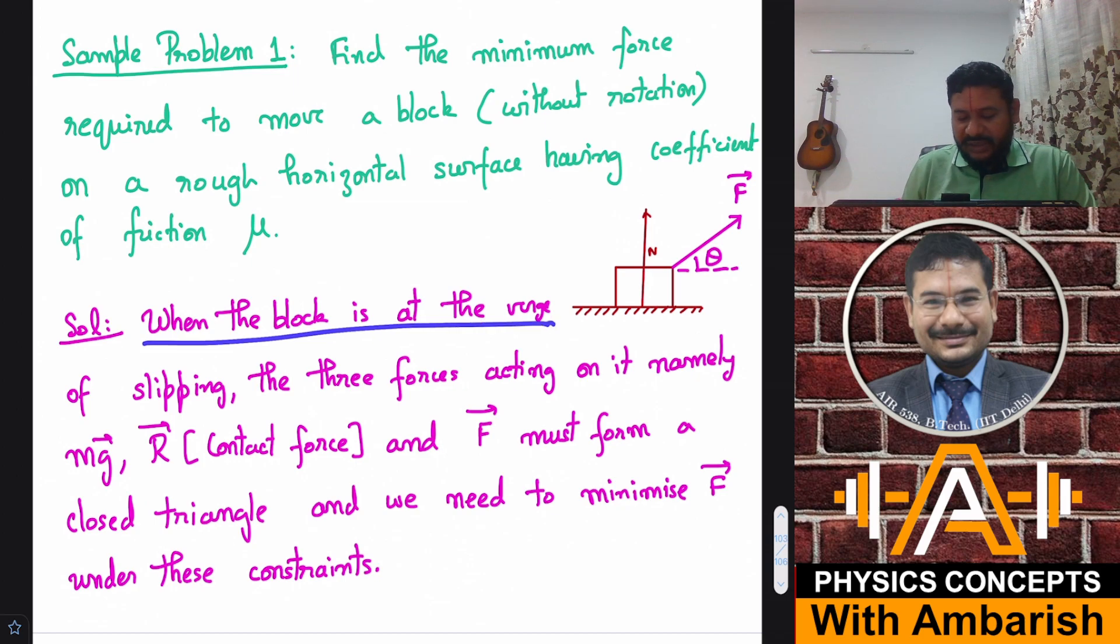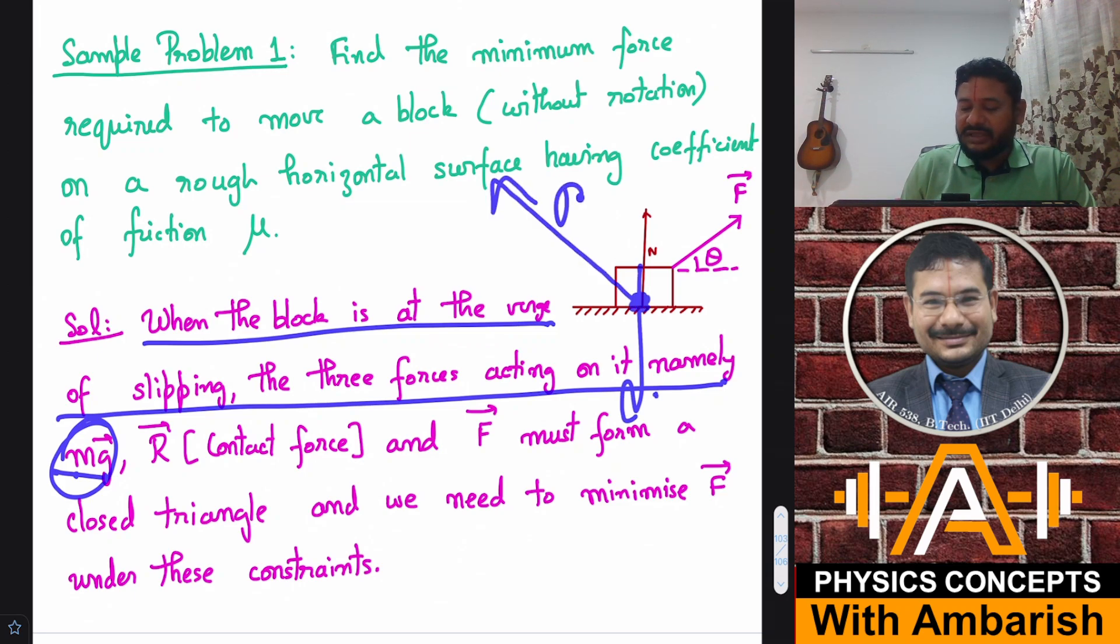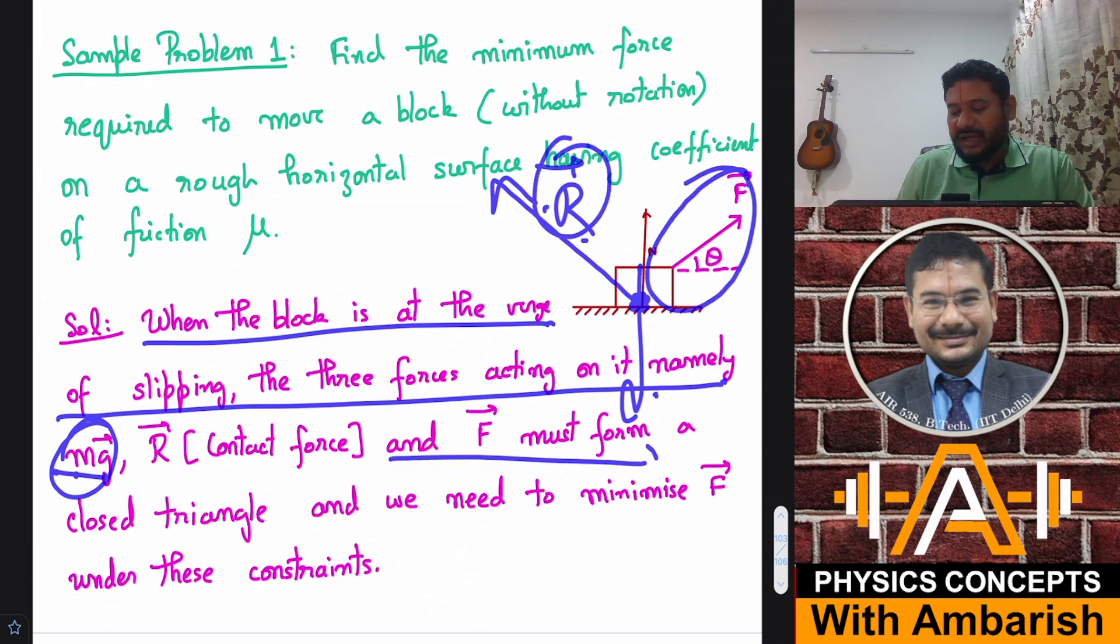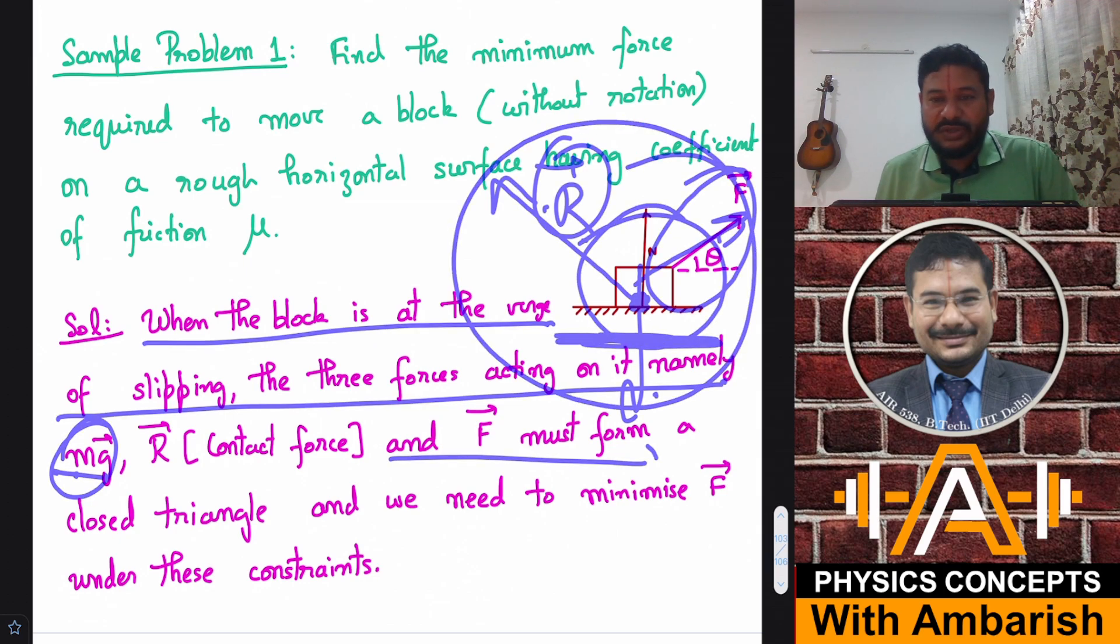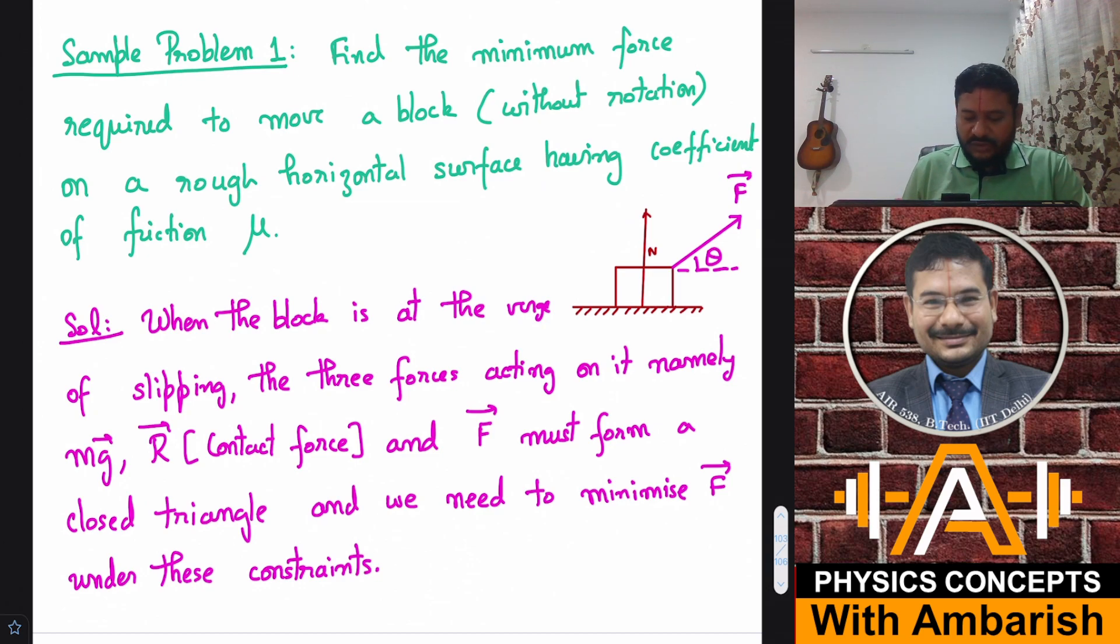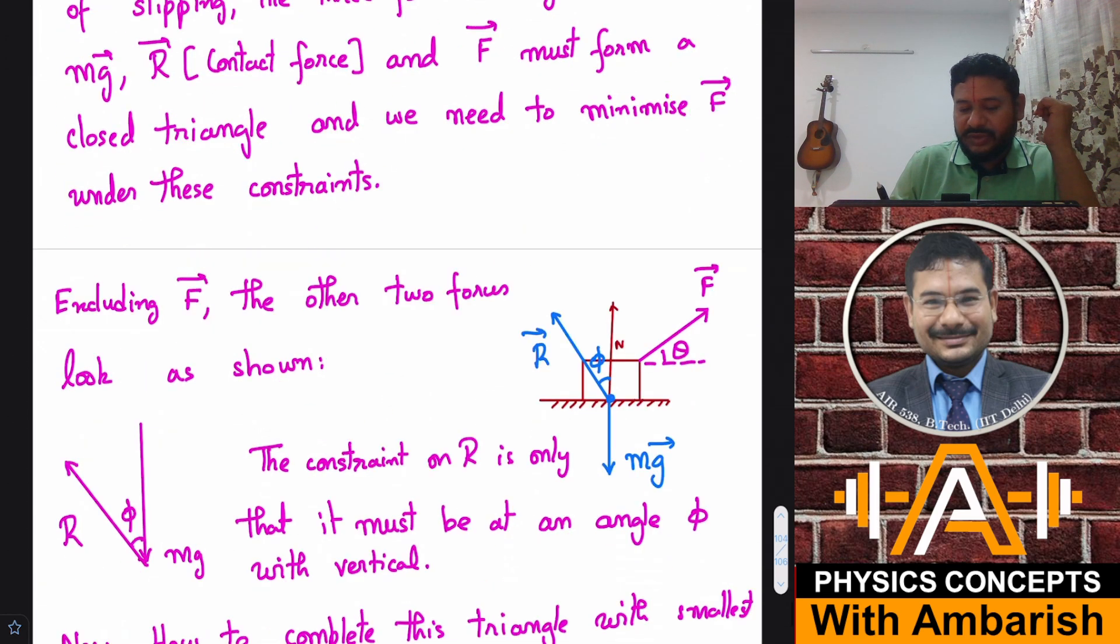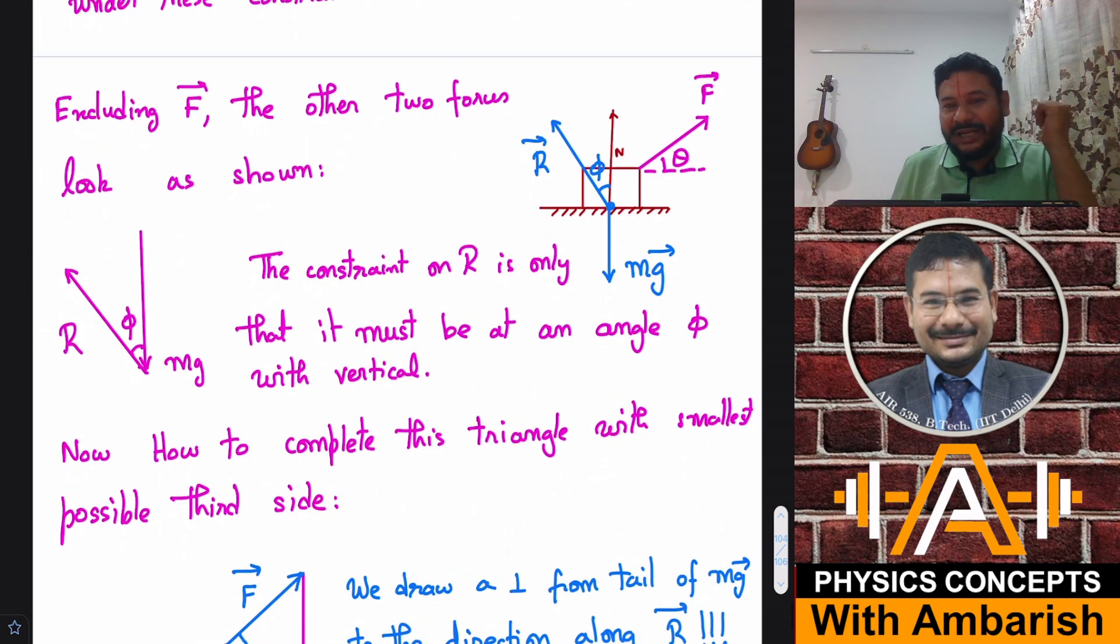So how do we do? When the block is at the verge of slipping, the three forces acting on it are what? One is the mg downward and then there is a resultant contact force. Let's say R⃗ is the resultant contact force and then there is our applied force and since it's at the verge of slipping, there is equilibrium we can say and therefore all these three should form a closed triangle. So we should have a closed triangle from this and we need to minimize F under these constraints. Let's see how to do this problem without using too many equations. In fact, I'll be doing it purely using geometry without any equations.